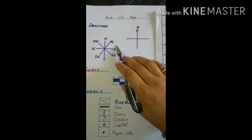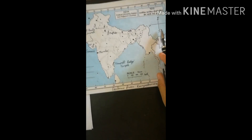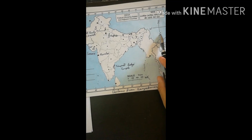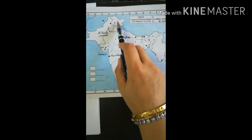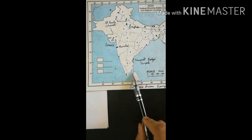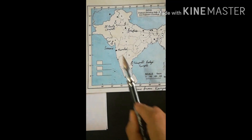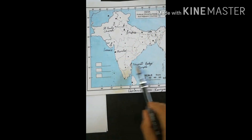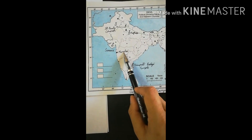Directions — you can see this sign on every map. This shows that at the top of the map there is always the north direction, at the bottom there is south, here it is west, and here it is east. This is how you can identify any state and its direction.